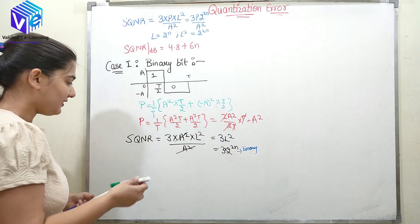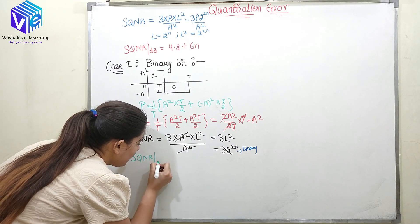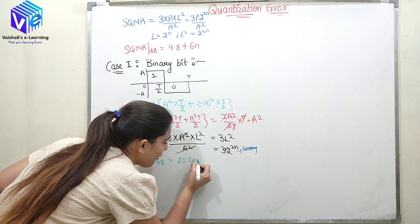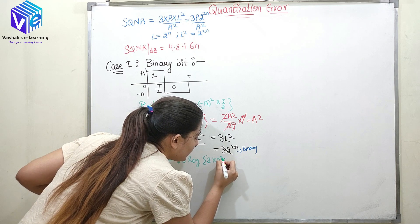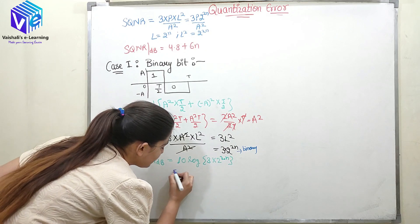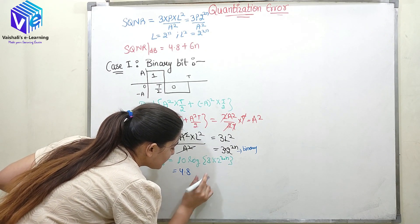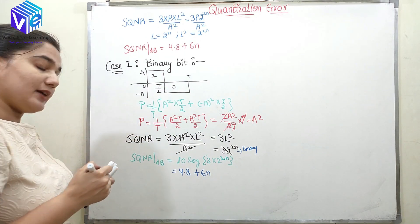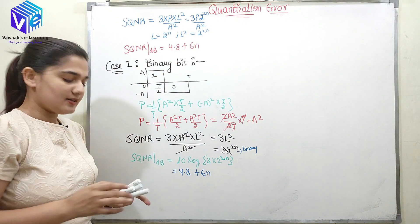If I represent SQNR in dB, it is 10 log of 3 times 2 raised to power 2N, which equals 4.8 plus 6N. This completes case 1, where I considered my signal to be a binary bit.